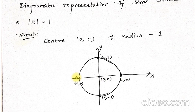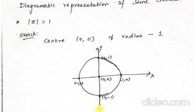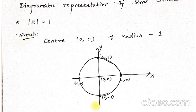Moving right or left changes the x-value; moving up or down changes the y-value. When moving right, x increases; when moving left, x decreases — y does not change at all. When moving up, y increases; when moving down, y decreases — x does not change. On left and right only x changes; on up and down only y changes. Keep this in mind.